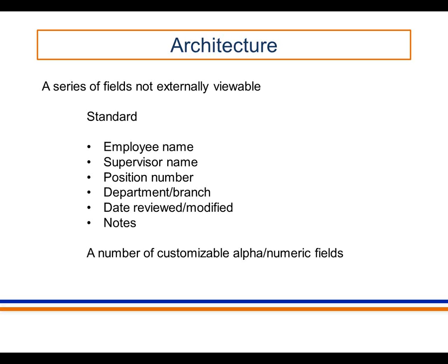To make this as useful as possible for institutions, we'd also have a number of fields that could be used or not, depending on institutional preference, that they could define themselves. For example, an institution might want to include whether someone has union status or even include salary information. These would not be viewable outside of the institution. We'll come with some of these preloaded, but institutions could customize them.